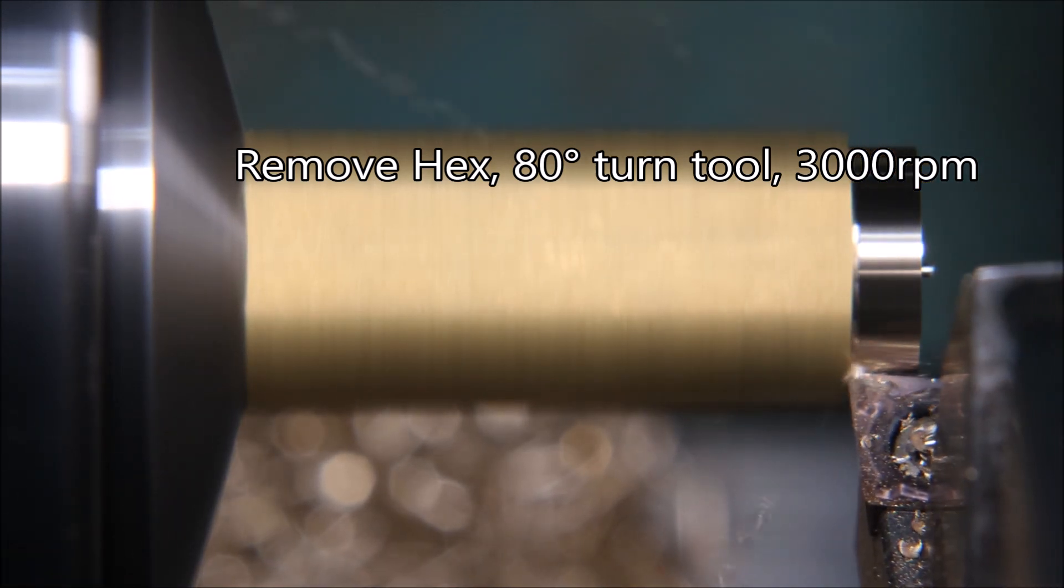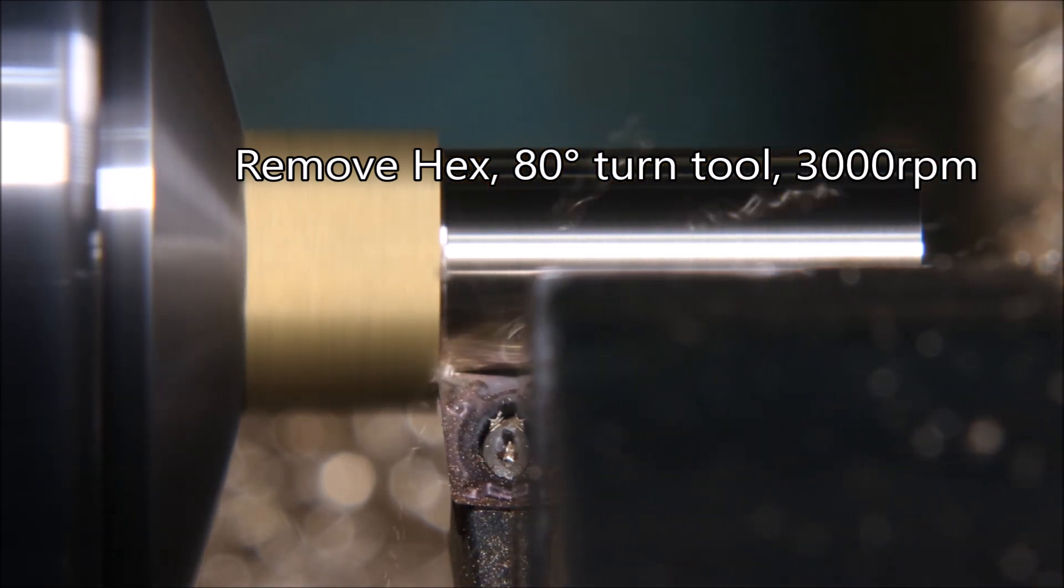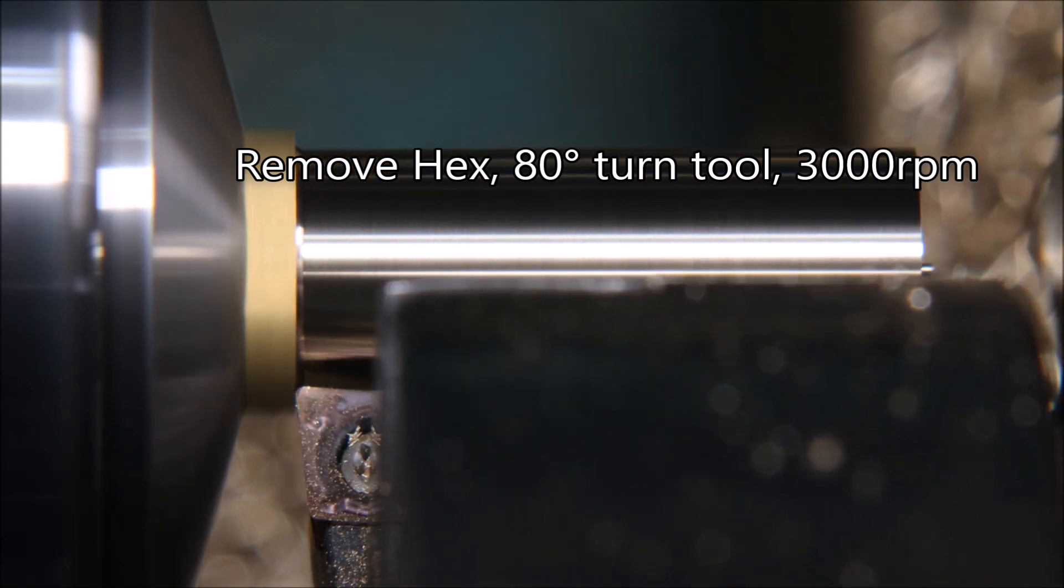I'm holding the blanks in a hex 5C collet. Here I'm using a small 80 degree turning insert to remove the hex.